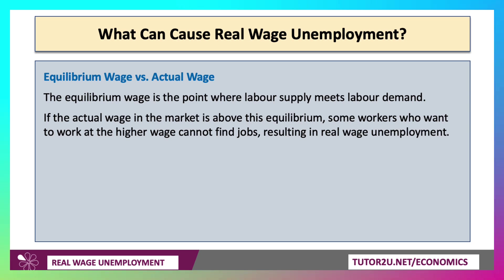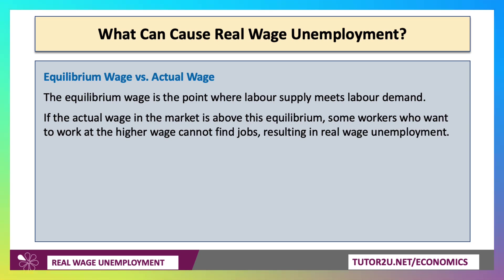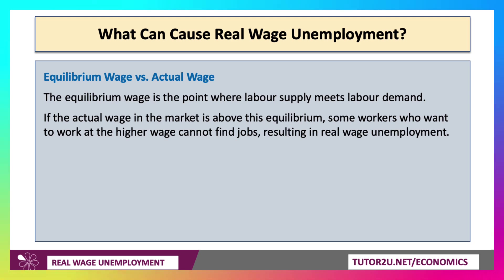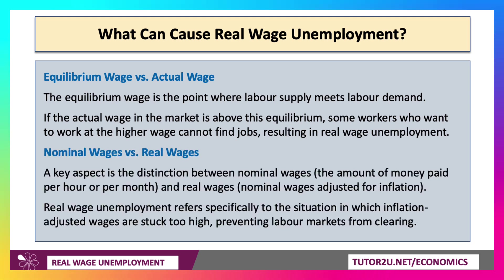So what can cause real wage unemployment? The key thing is the idea of the equilibrium wage versus the actual wage — the prevailing wage. If the actual wage is above the equilibrium, there will be some people who want to work at the higher wage but can't get jobs, resulting in real wage unemployment.